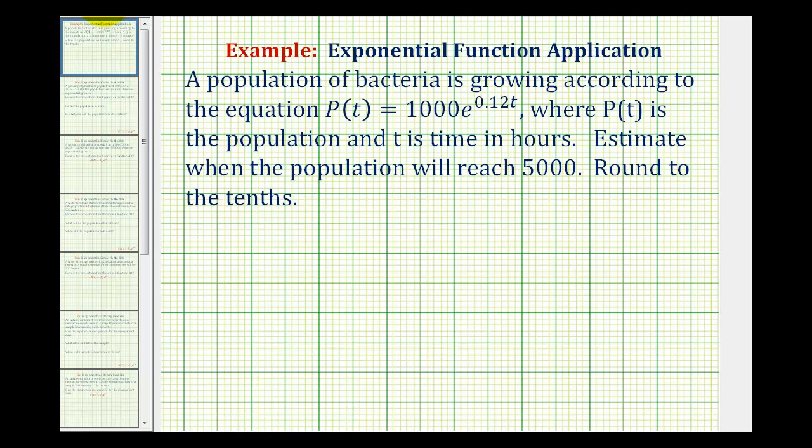A population of bacteria is growing according to the equation P(t) = 1000e^(0.12t), where P(t) is the population and t is time in hours. We want to estimate when the population will reach 5,000 and round to the nearest tenth.